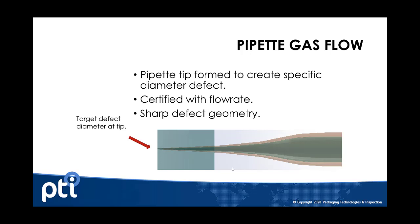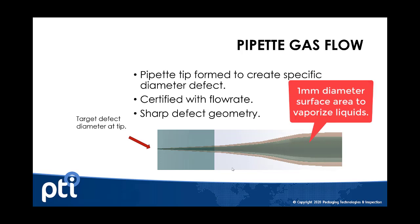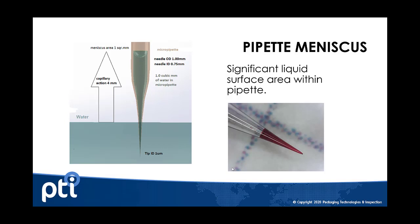A pipette, similar to a capillary, is an elongated tube. The difference is that the certified defect or very small defect is located at the tip of the pipette, which then flutes outward to a one millimeter internal diameter tube. A pipette is worse than a normal capillary because it draws liquid up into that fluted space, creating a larger basin for vaporization. So a pipette is even worse to use when validating a parenteral type application.